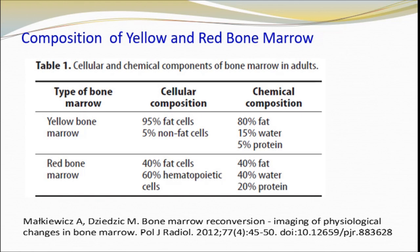Regarding composition of yellow and red bone marrow — in yellow bone marrow, 95% are fat cells and 5% are non-fat cells. In red bone marrow, 40% are fat cells and 60% are hematopoietic cells. In chemical composition, yellow bone marrow contains 80% fat, 15% water and 5% protein, while red bone marrow contains 40% fat, 40% water and 20% protein.